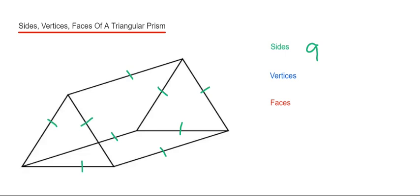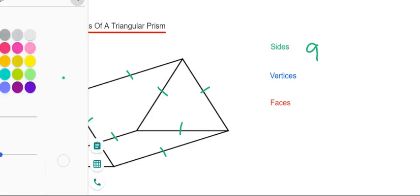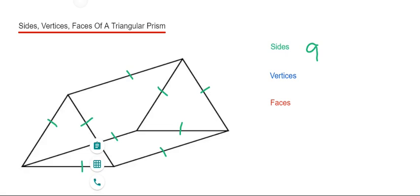Let's do the vertices next. The vertices are the corners of the shape, where the sides meet. We've got 1 here, 2, 3, 4, 5, 6. So we've got 6 vertices.